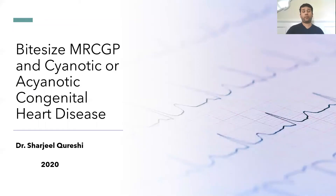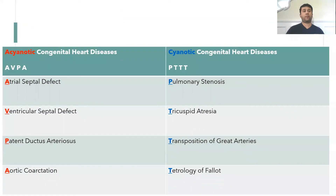A very quick video to remember congenital heart diseases. For acyanotic congenital heart diseases, the causes are: atrial septal defect, ventricular septal defect, patent ductus arteriosus, and coarctation of the aorta.